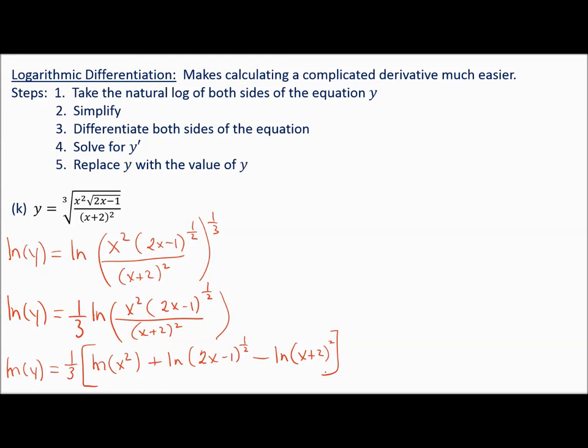The final step in simplification is to move these exponents in front: the 2 goes in front of the first logarithm, the 1 half goes in front of the second, and the 2 goes in front of the third logarithm.